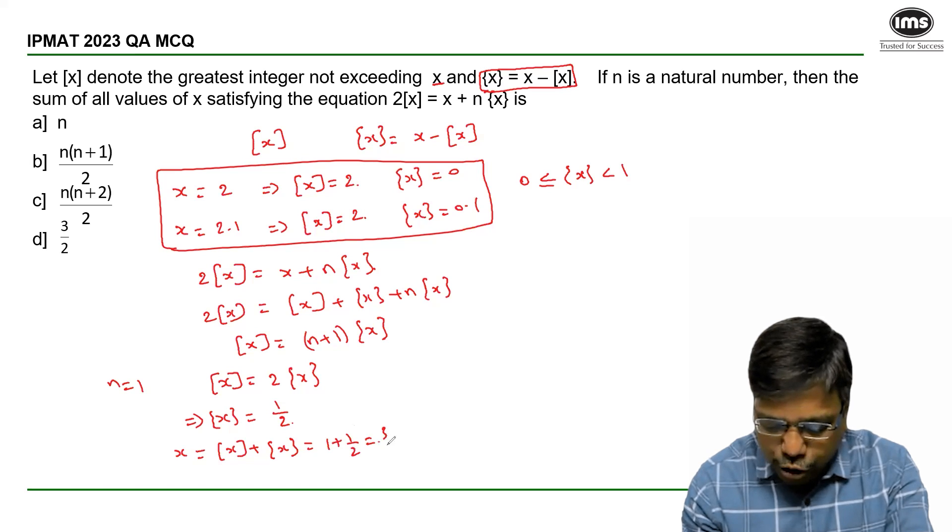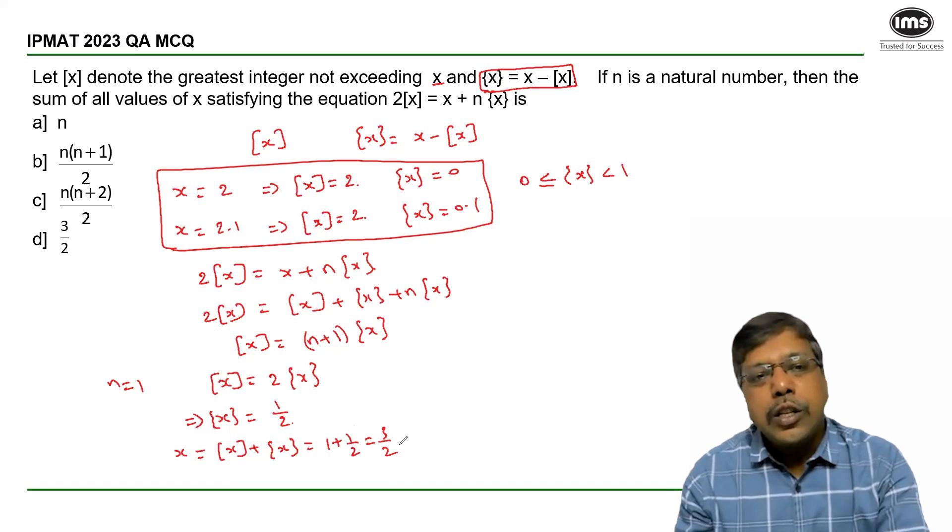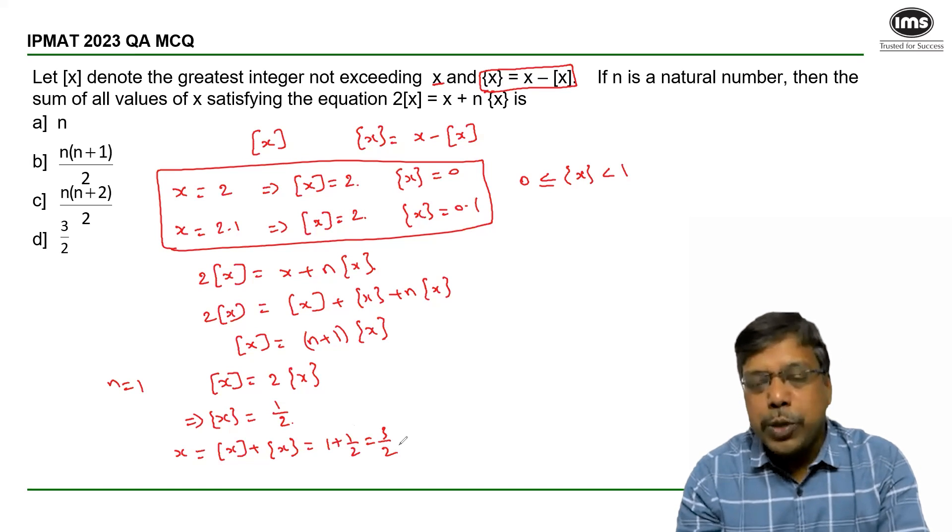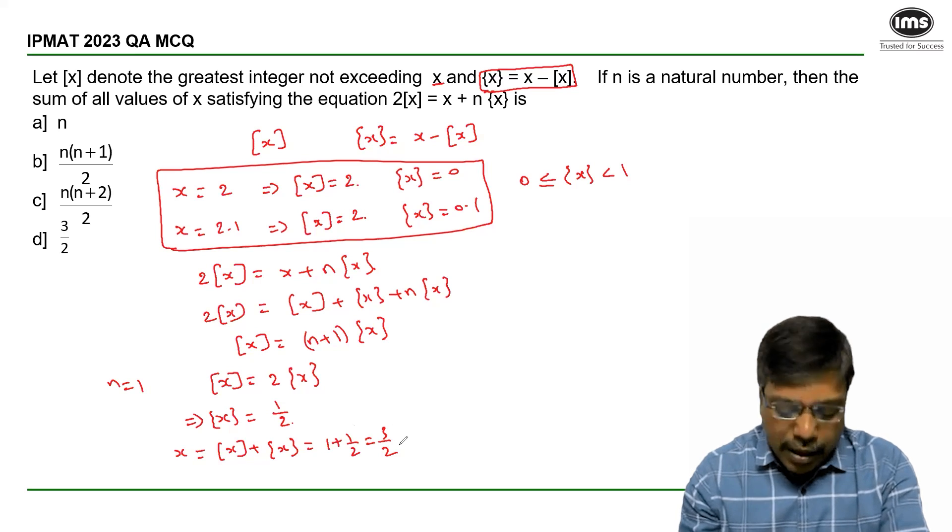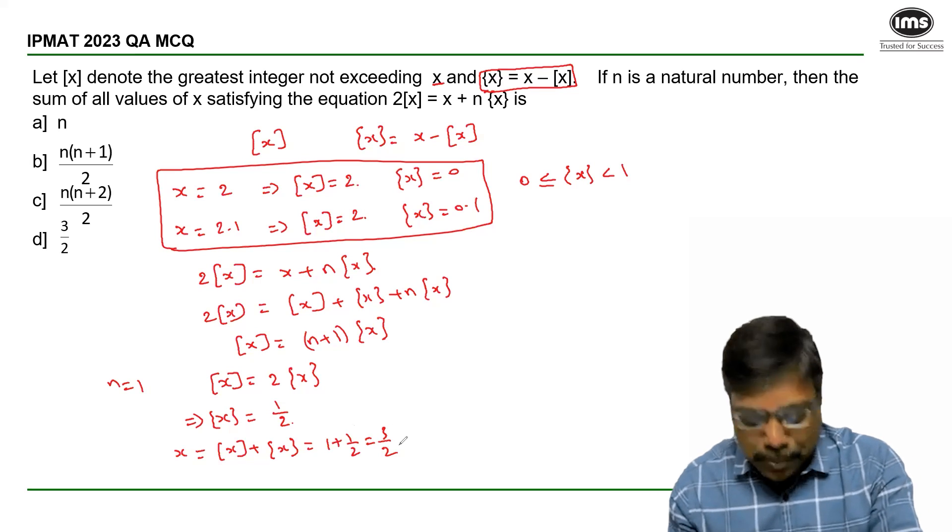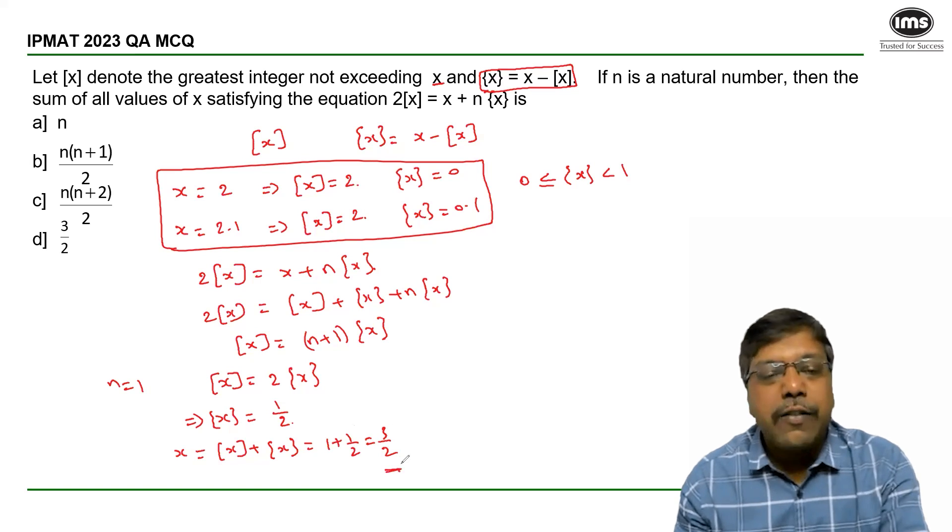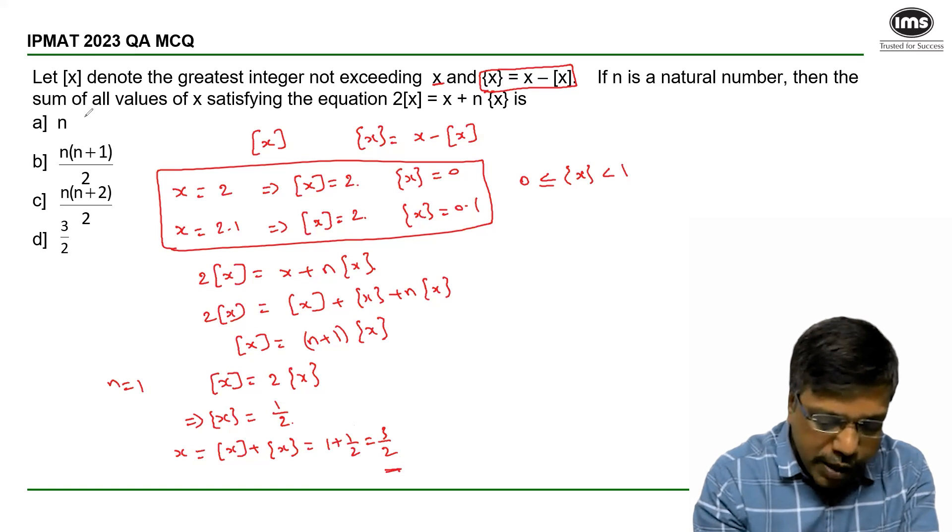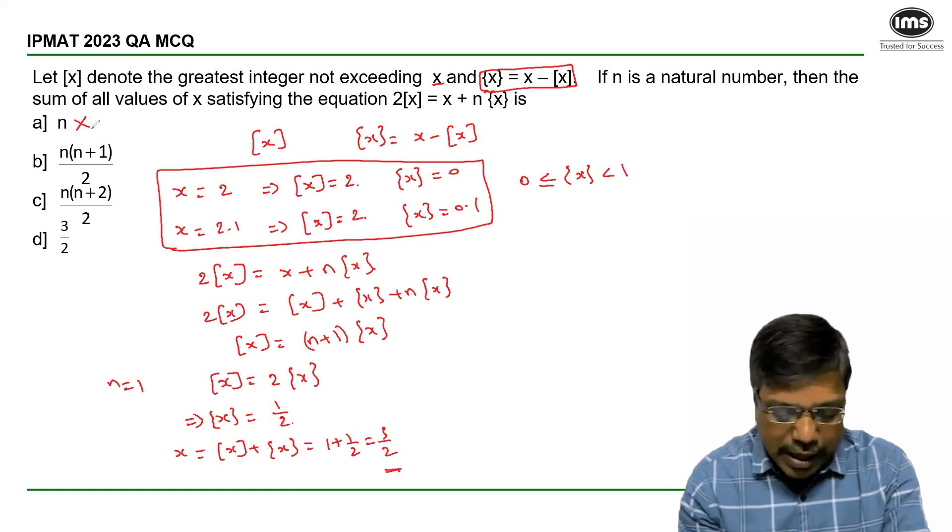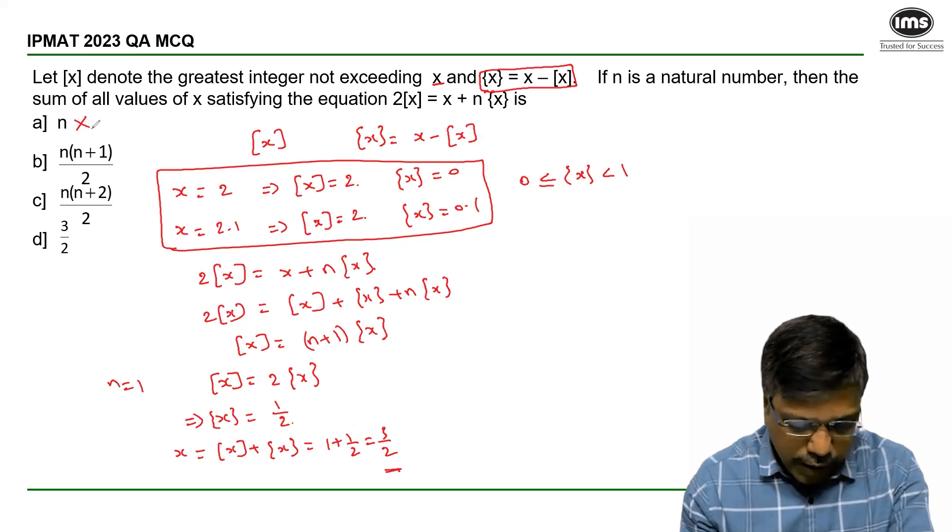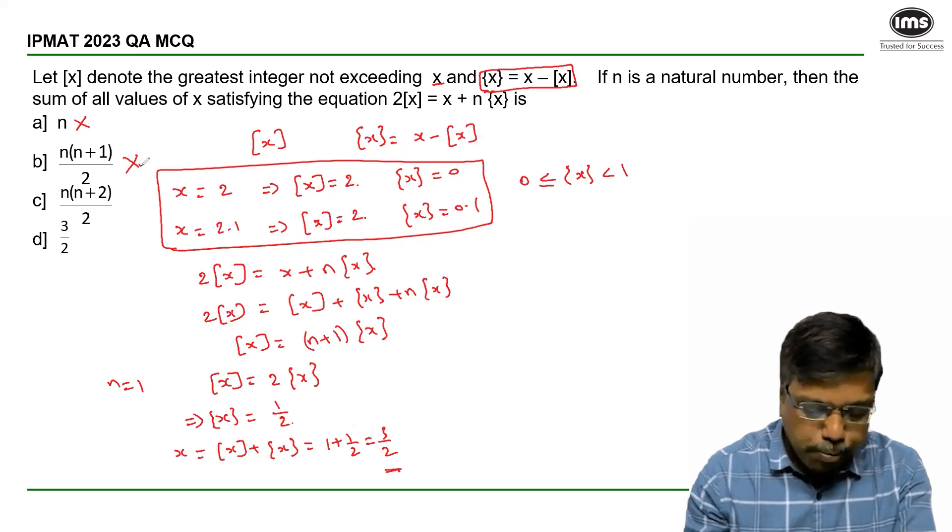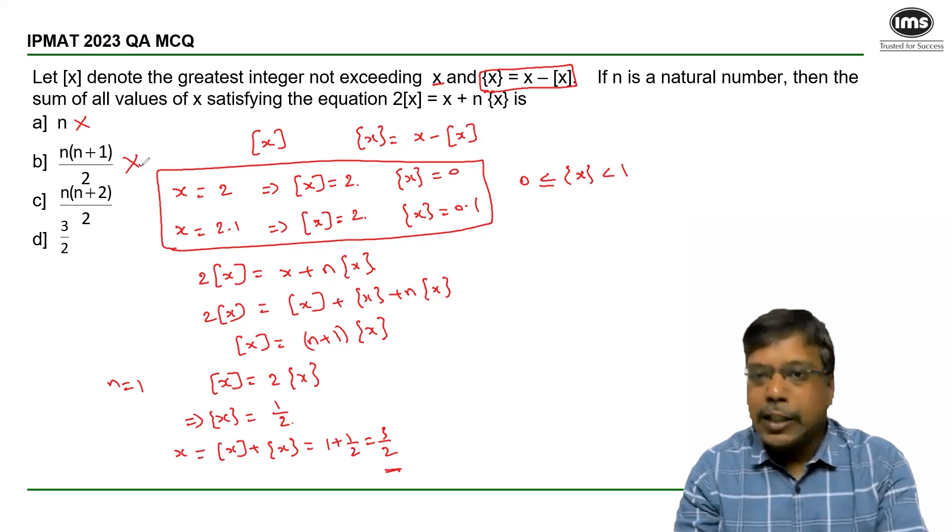I can use the answer options to identify which one satisfies this. When I substitute n = 1, which gives me the value 3/2, obviously not the first option. The second one: 1×2/2, the third and fourth also satisfy.